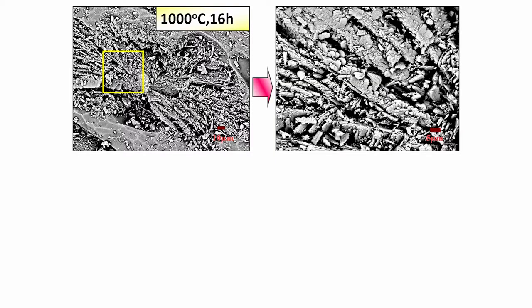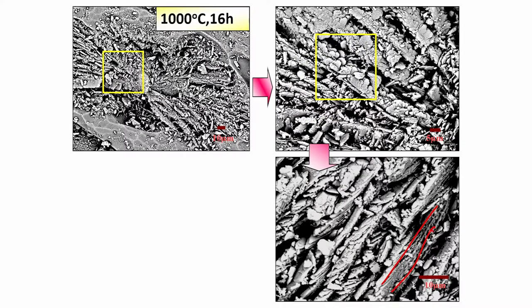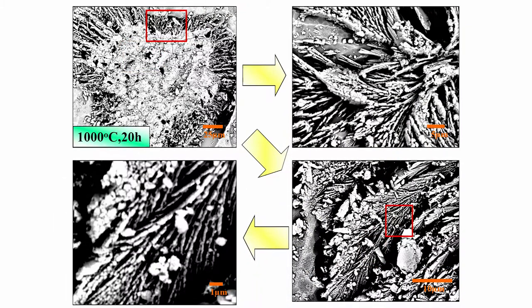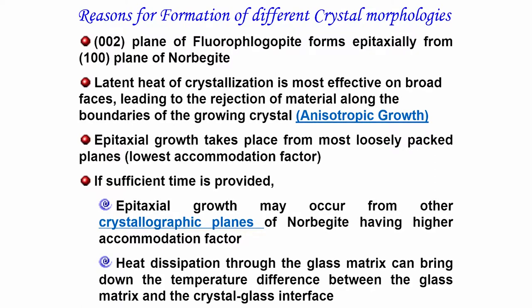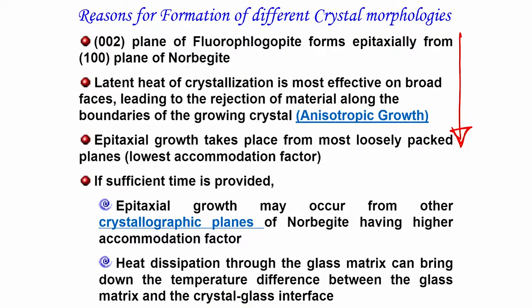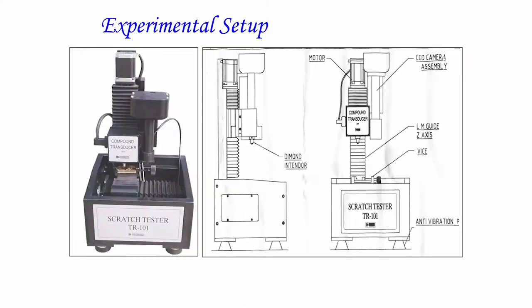Zooming into different areas of the butterfly crystal reveals how the crystal phases grow in different directions. These are observations of how the butterfly crystals grow when the glass ceramic is heat treated at 1000°C for 20 hours. While the underlying scientific reasons for this microstructural development may not be fully detailed in this course, changing heat treatment conditions can essentially develop different butterfly crystal morphologies in this glass ceramic material.